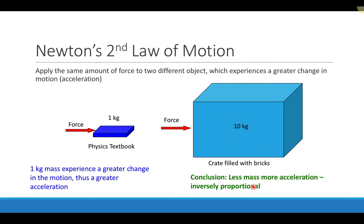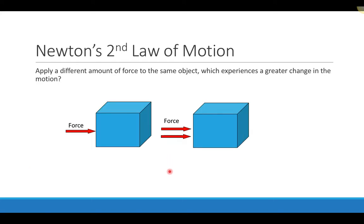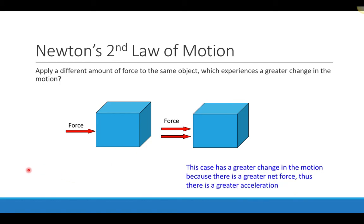The crate, which has a larger mass, will have less acceleration because it has more inertia — it's harder to change its motion. On the other hand, if we take two identical crates and apply a force on one and twice the force on the other, these two crates experience a different change in motion. The crate with twice the force experiences a greater change in motion and therefore a greater acceleration. More force implies more acceleration — they are proportional to one another.